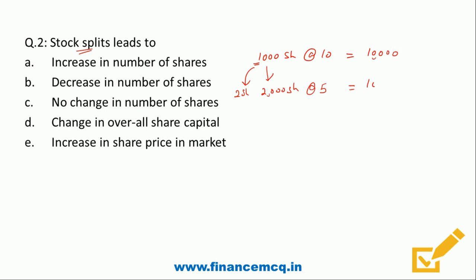So 1,000 shares become 2,000 shares and price changes from ₹10 to ₹5, keeping total share capital the same at ₹10,000. Number of shares is increasing from 1,000 to 2,000 — Option A is correct. Share capital remains the same, so Option D is wrong. Share price has fallen from ₹10 to ₹5, so Option E is also wrong. The correct answer is Option A: increase in number of shares.